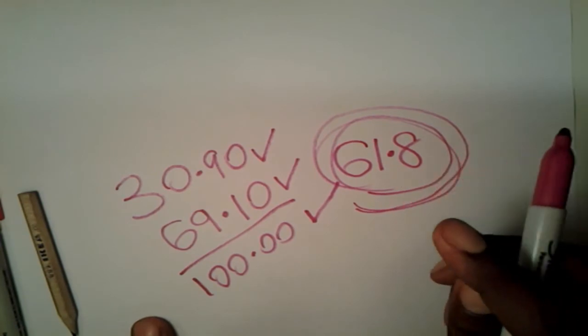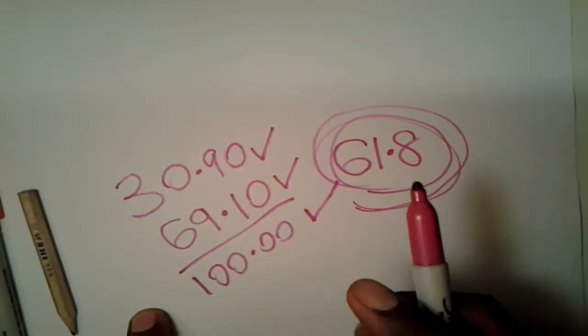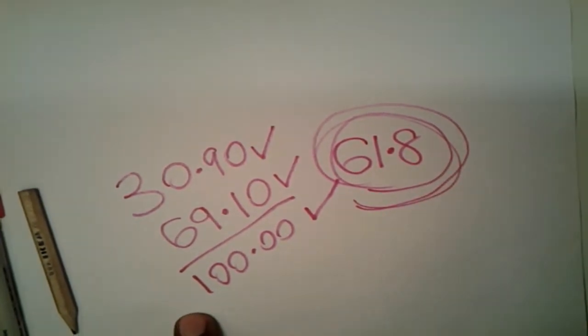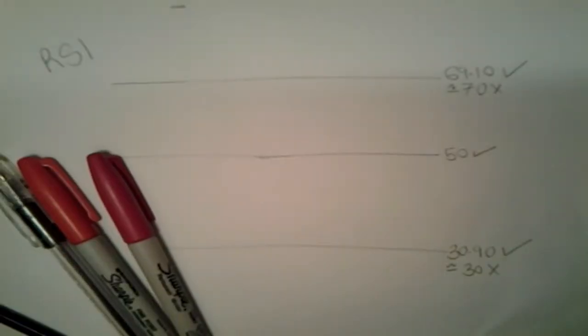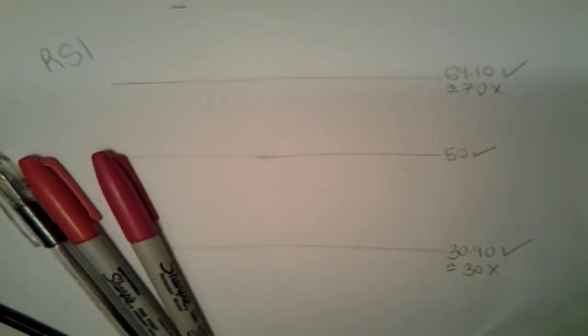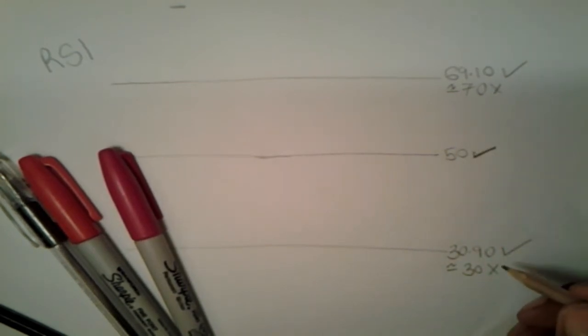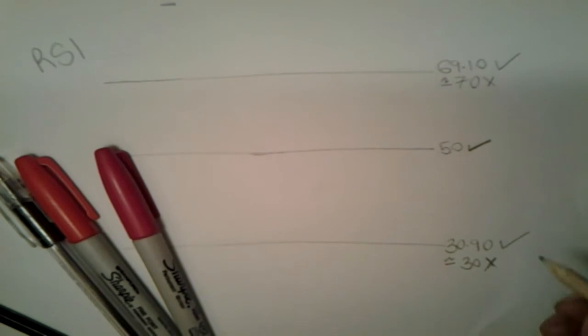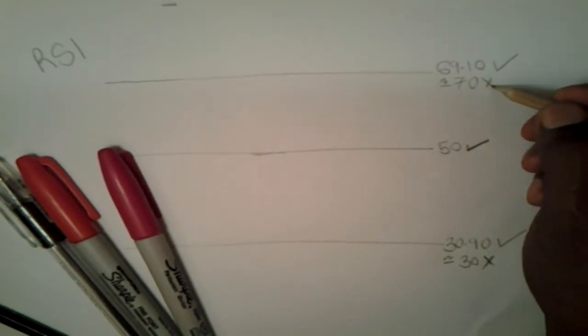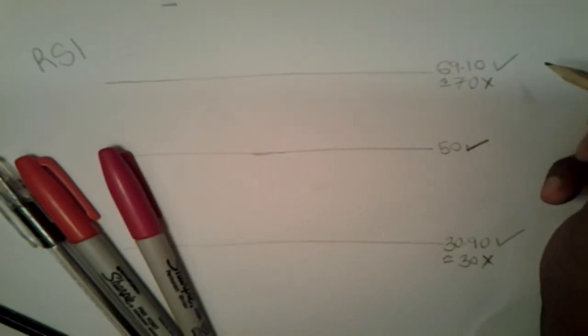That number there is the magic number. So let's get on with the video here so we can explain some things. You will notice that in most RSI charts they are always going to be giving you the 50 level tick and they also give you 30 as a lower level and they also give you 70 as a higher level.